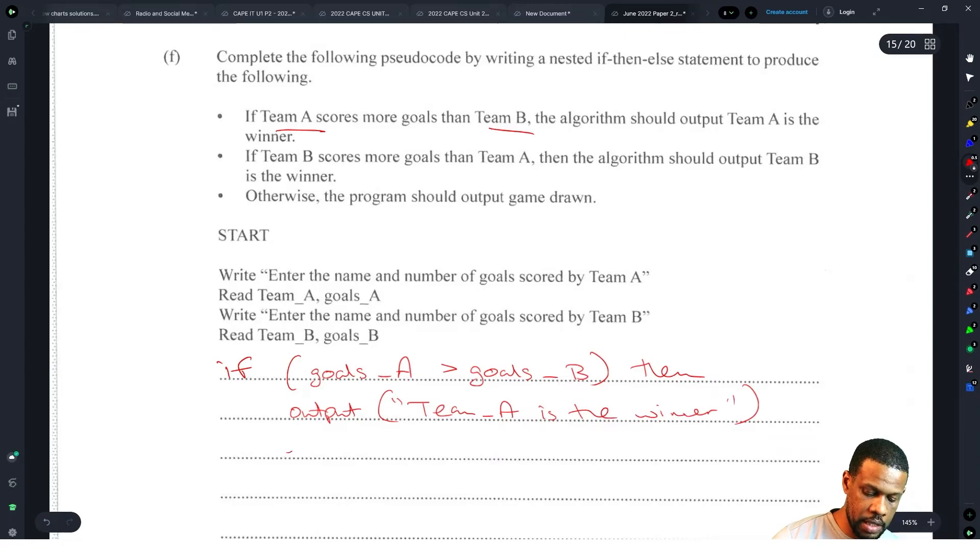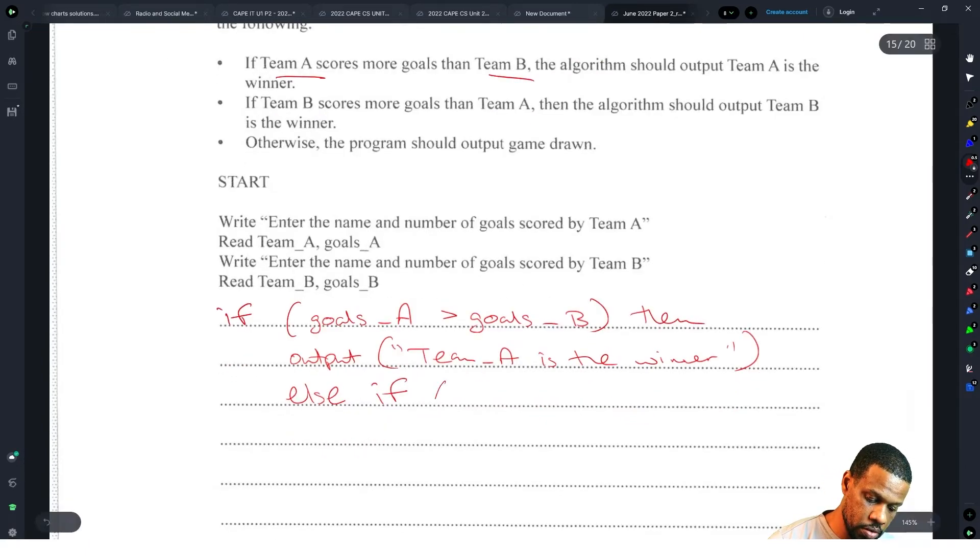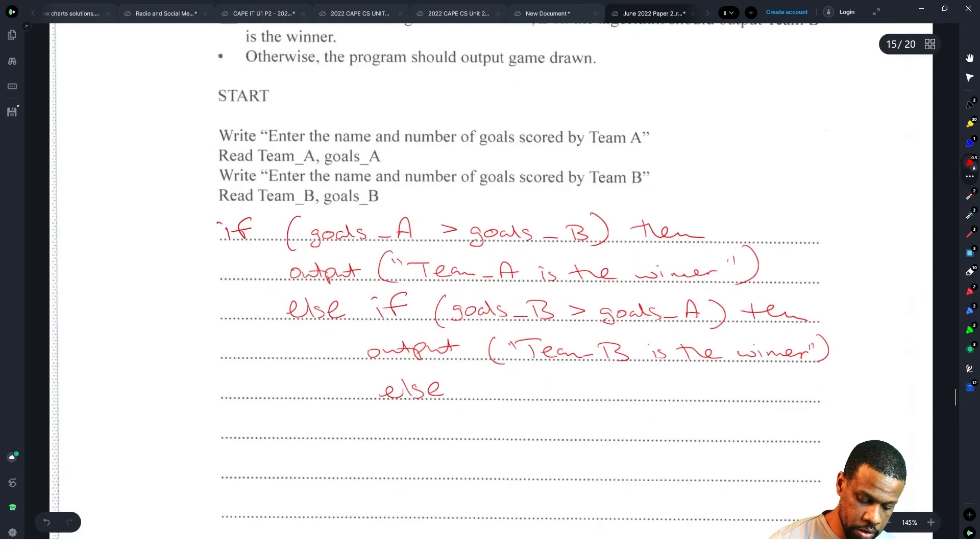Else if - because they wanted a nested if - so else if you check the next condition now. Goals_B greater than goals_A then output team B is the winner, else output game drawn.